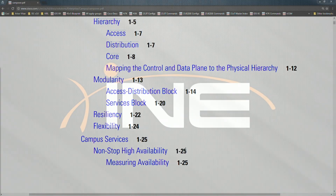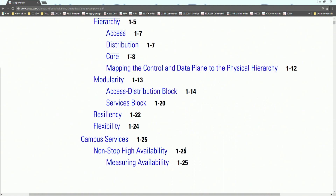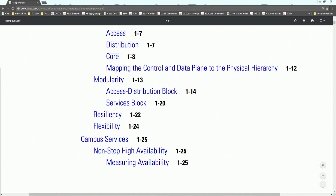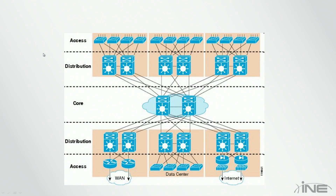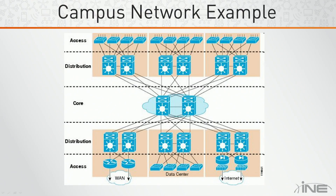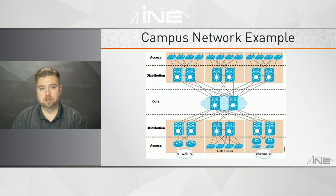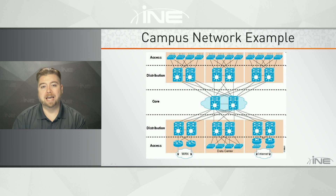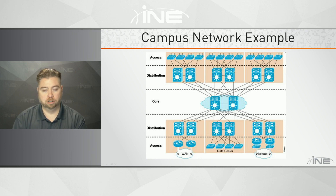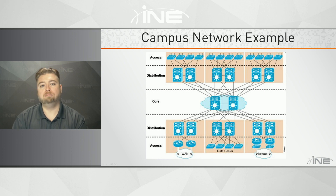Looking at the traditional design visually — this is our traditional campus network or three-tier design. The access layer is where we plug in our services: end stations like desktops, printers, wireless access points, etc. We then aggregate the physical cabling and bandwidth to the distribution or aggregation layer, which is typically where our Layer 2 to Layer 3 gateways reside — the default gateway from the desktop's point of view. Then the core connects the different distribution blocks together.